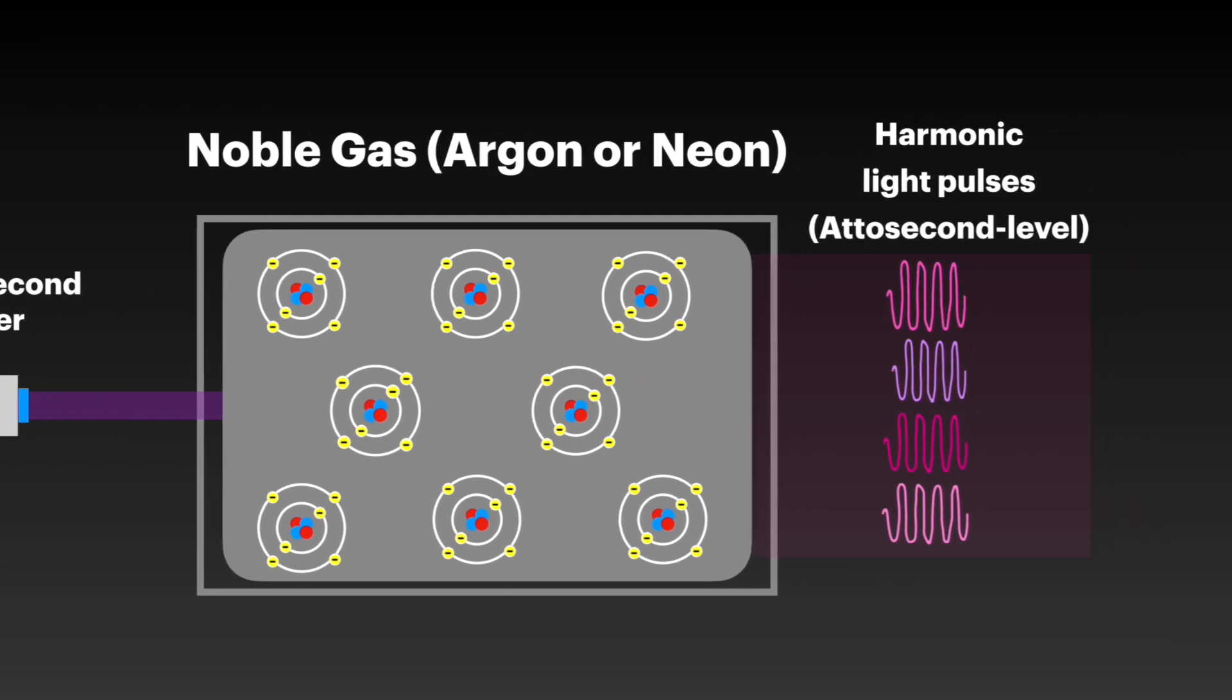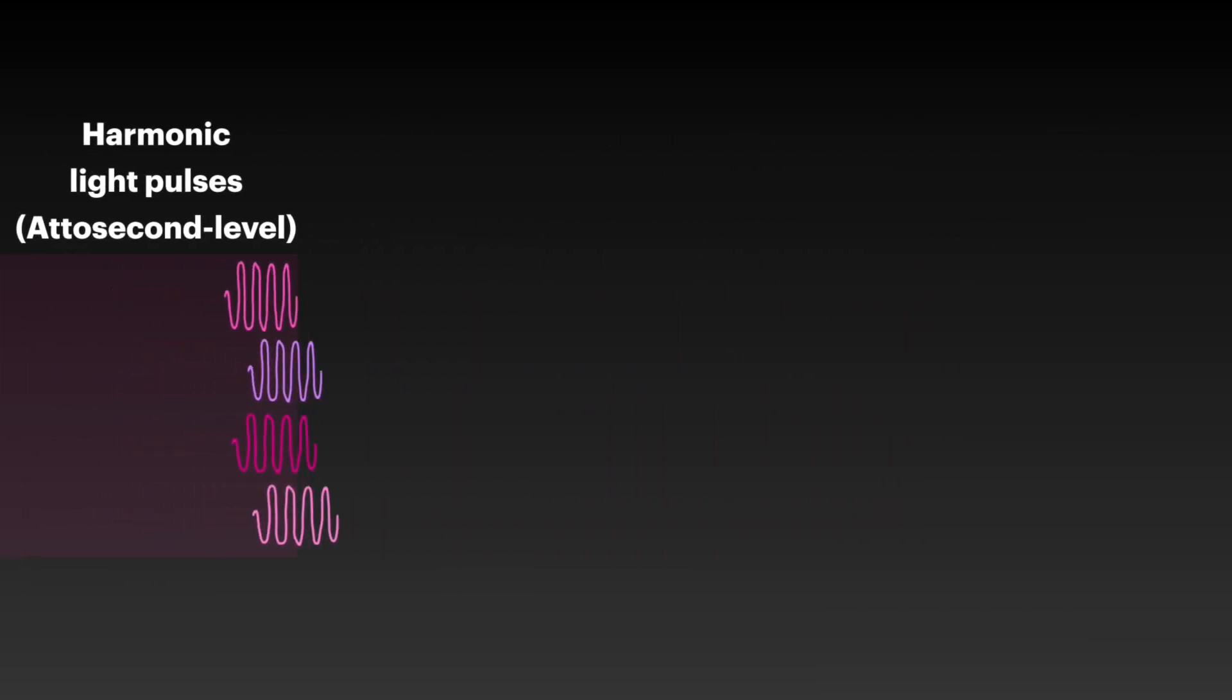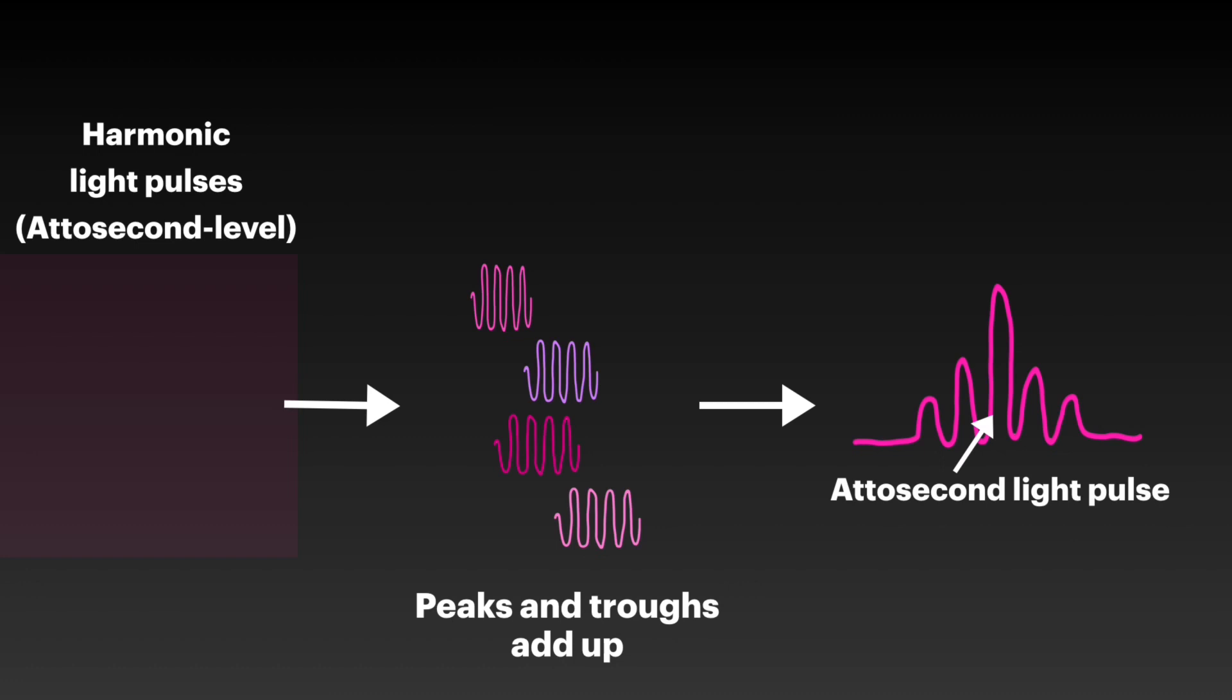The second part was to take all the different frequencies emitted by the gas, and then lining them up so that they would align, and the peaks would add up with certain peaks, while the troughs would cancel out certain peaks, to create extremely short, high-intensity attosecond-level light pulses.